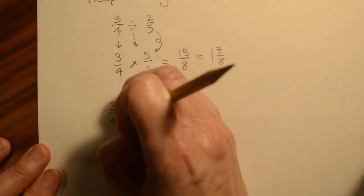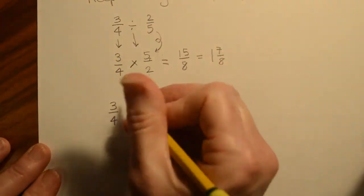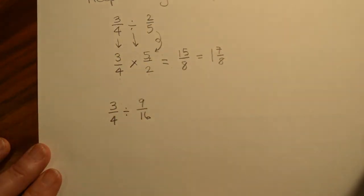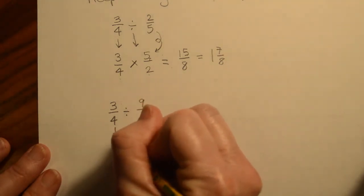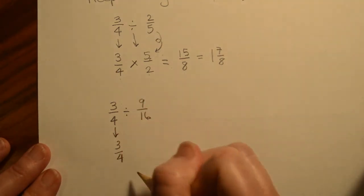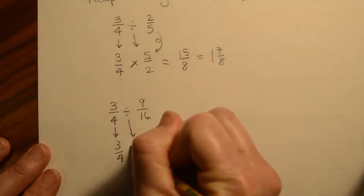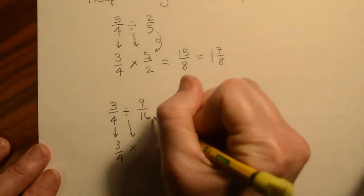Sorry, and that should not be times, it should be divide. All right, so again, we use keep, change, flip, we're going to keep the 3/4 the same, change the division to multiplication, and flip the second fraction.